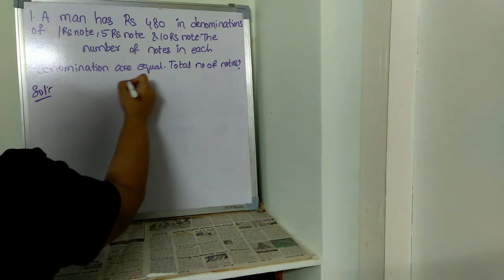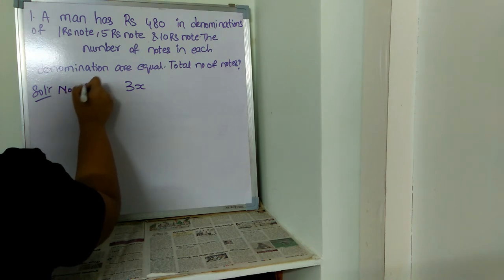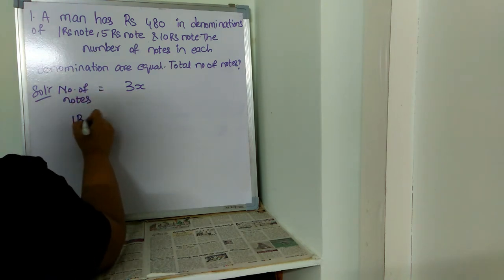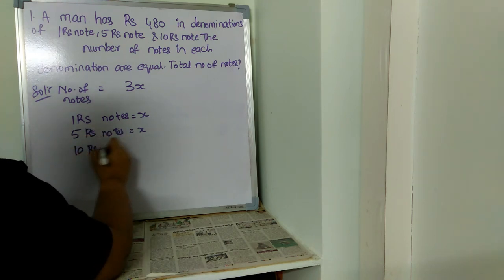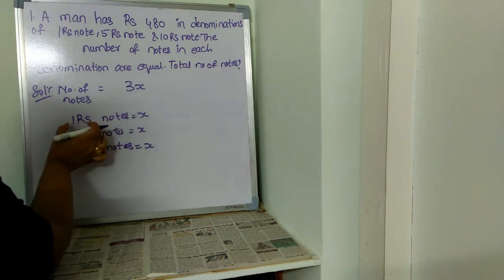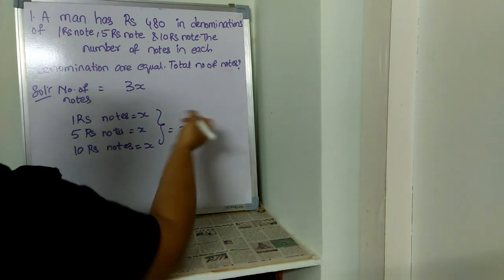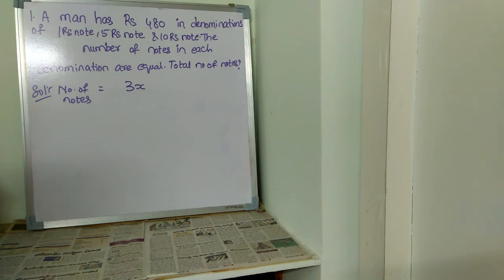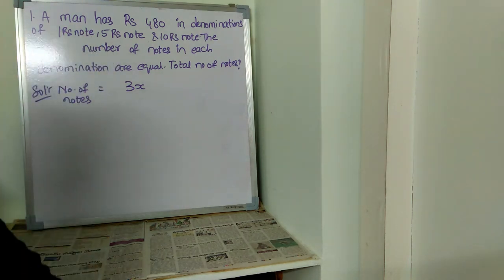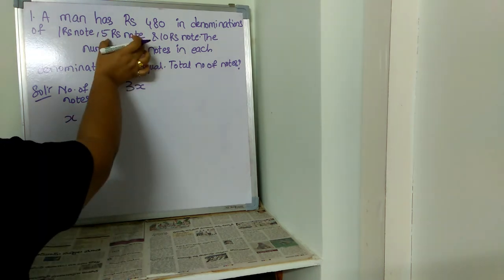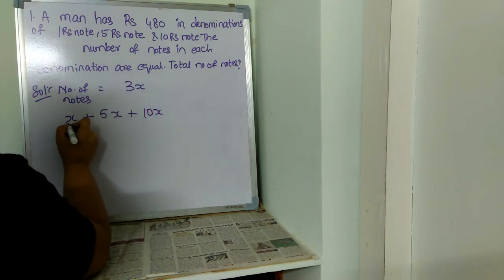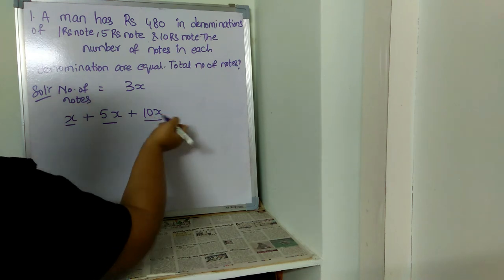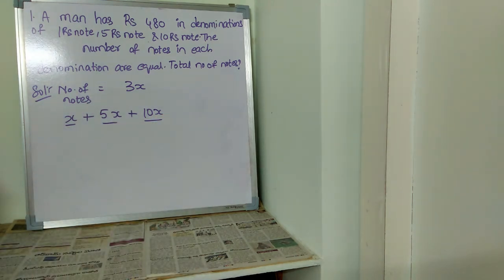The total number of notes will be 3x, because let the one rupee notes be x, let the five rupee notes be x, and let the ten rupee notes be x — the count of each denomination is x, so totally it makes 3x. Now for the values: one rupee note is worth x, five rupee note is worth 5x, and ten rupee note is worth 10x.